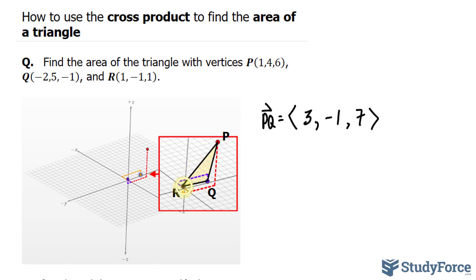Next, I'll find the X, Y, and Z components of P to R. Doing the same thing, 1 minus 1 is 0, 4 minus negative 1 is positive 5, and 6 minus 1 is positive 5 as well.